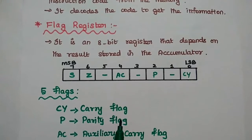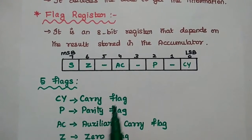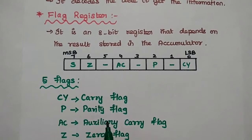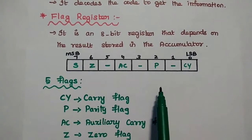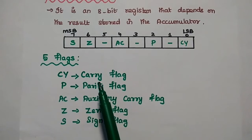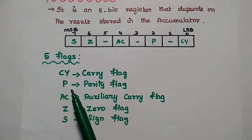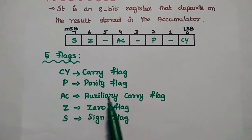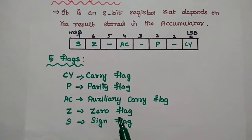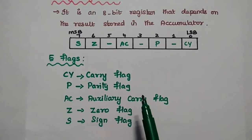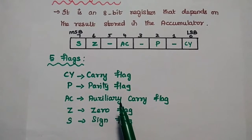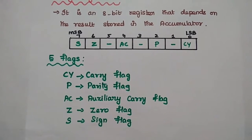The flag register has 8 bits, but only 5 flags are used; the remaining 3 bits are not defined. The 5 flags in the 8085 are: carry flag, parity flag, auxiliary carry flag, zero flag, and sign flag.